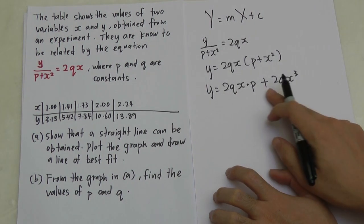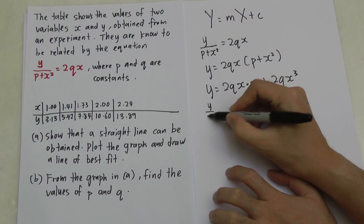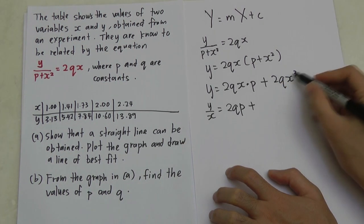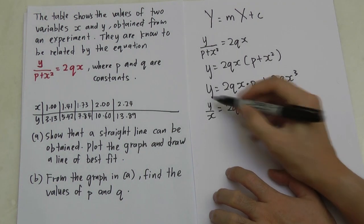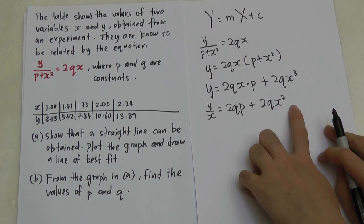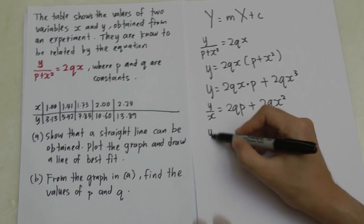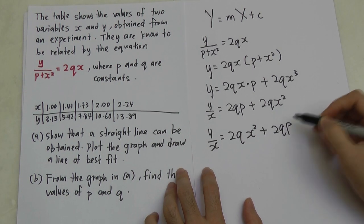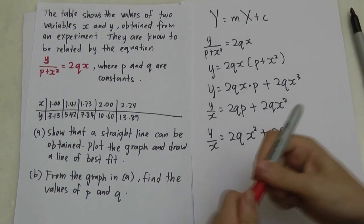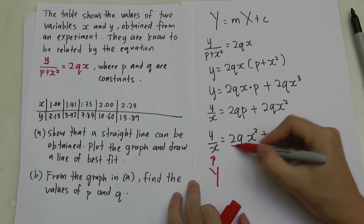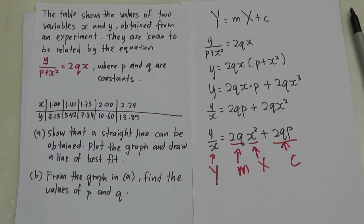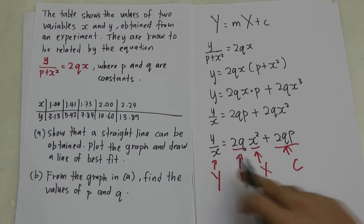Both dividing by X or dividing by Y will give you a straight line — both equations are correct. But normally dividing by X looks simpler. So I will get Y over X equals 2QP plus 2QX squared. Now this is the new Y, 2Q is M (beside X squared), and 2QP is C. So we have Y over X equals M times X squared plus C. I recommend this approach. After you get it into Y = MX + C form, you have to rebuild your table.